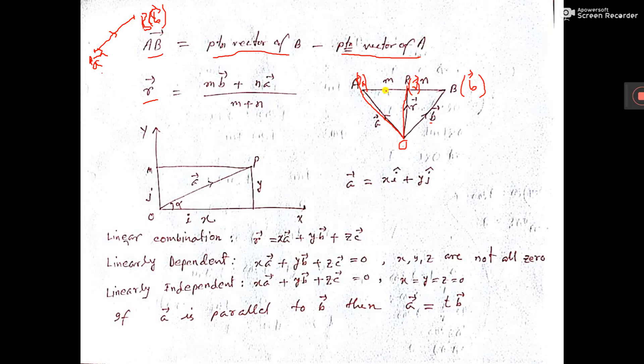If it is ratio M is to N, R point divide A B in the ratio M is to N. Then, small r is equal to M B plus N A by M plus N.